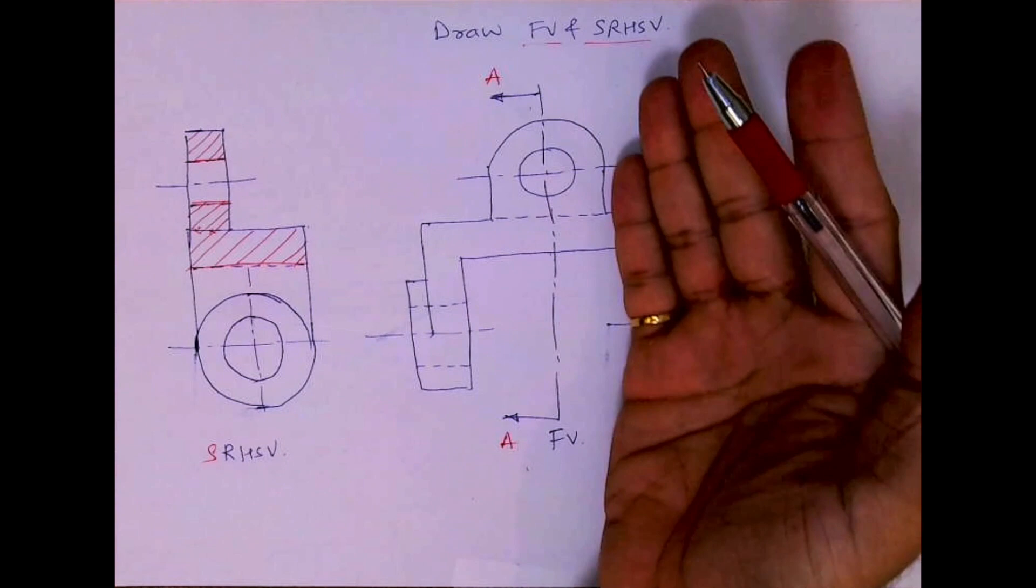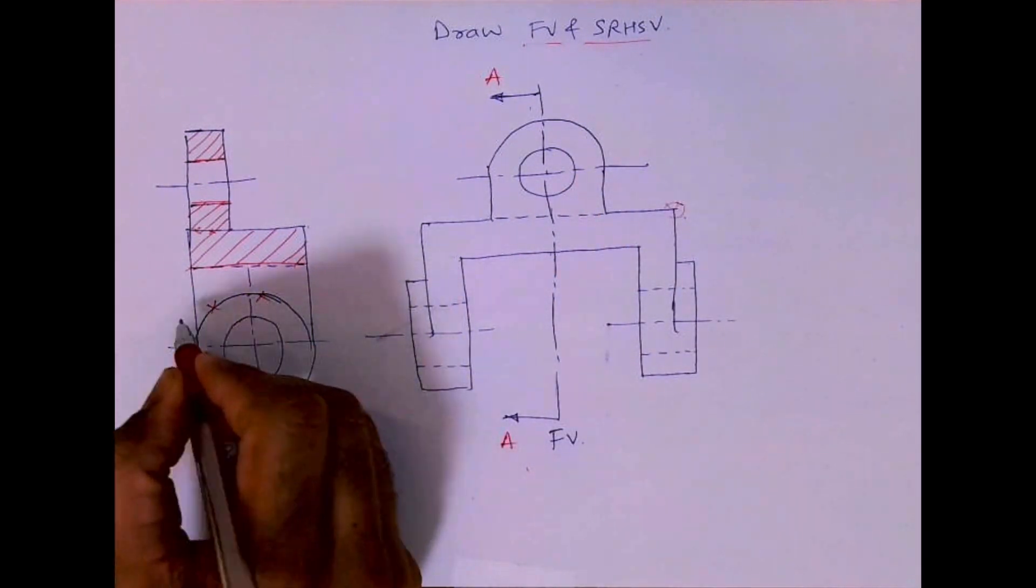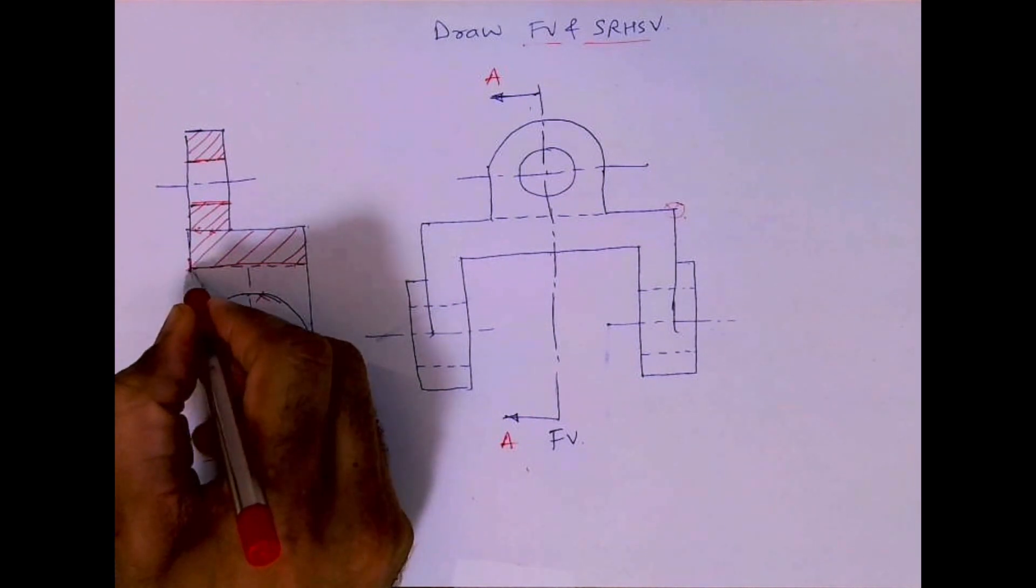Now when you see from here, you are not going to cut anything, but if you see this, this part is gone, this circular part. So we need to erase this semicircle, so it will be like this.